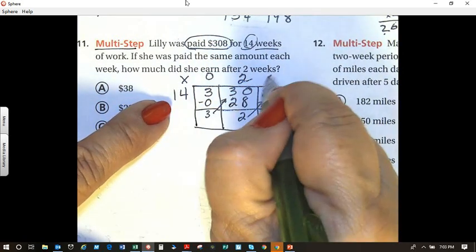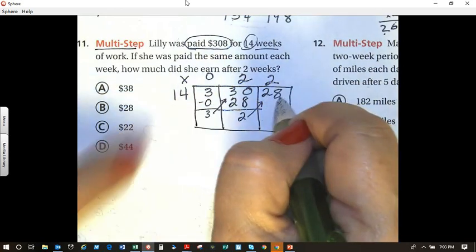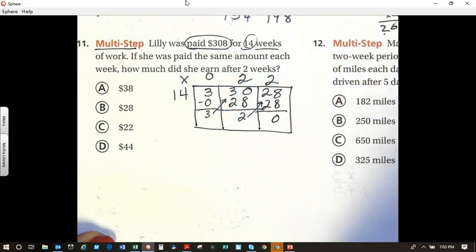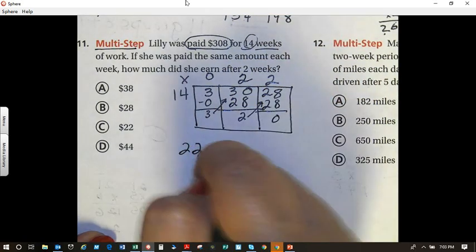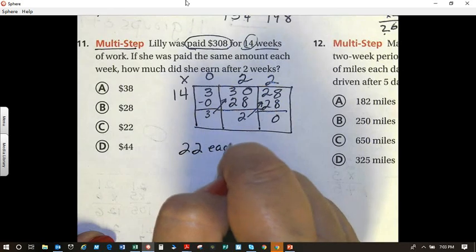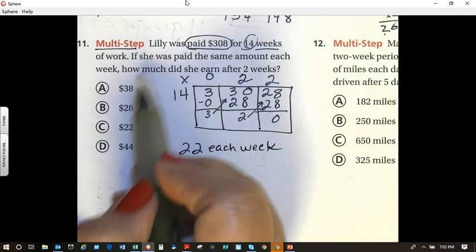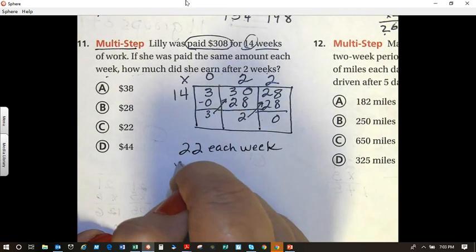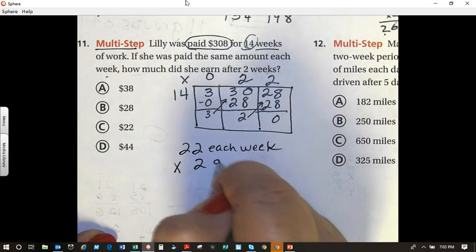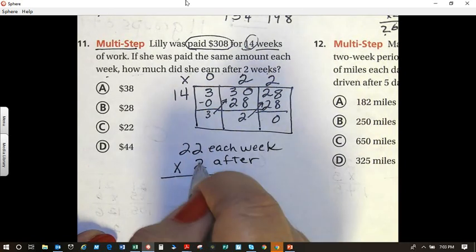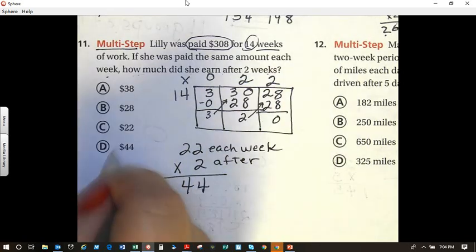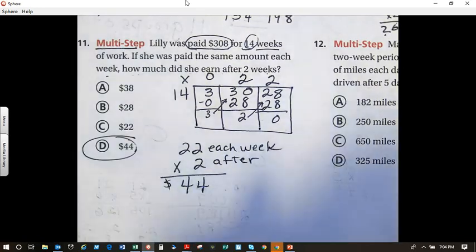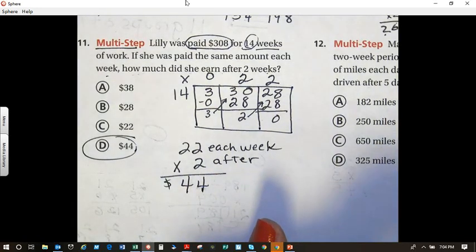14 can go into 28 two times with 20. So that's 28 and 0 left over. So she gets paid $22 each week. If she got paid the same amount each week, how much does she earn after two weeks? So this would be the two weeks after. 2 times 2 equals 4. 2 times 2 equals 4. And the answer is D. She got paid $44. Any questions? Come see me in the morning.